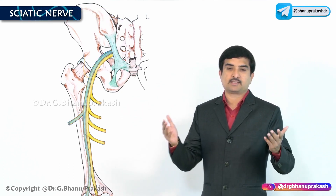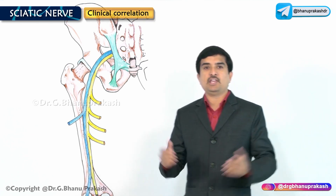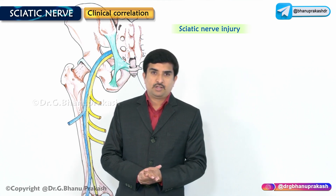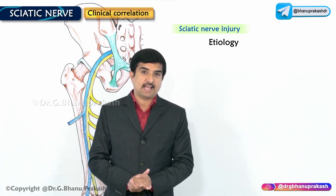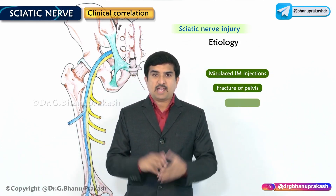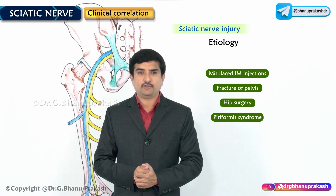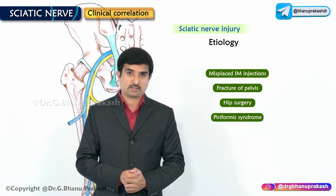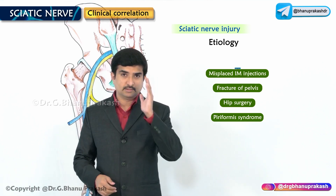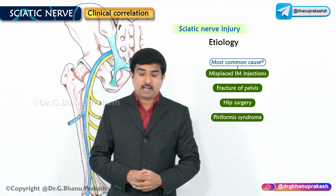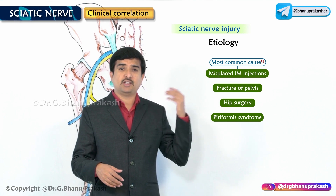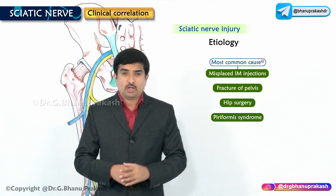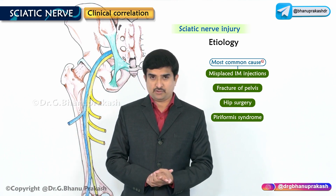Regarding the clinical correlation of the sciatic nerve, sciatic nerve injury is most commonly caused by intramuscular injections in the gluteal region. Other causes include posterior dislocation of the hip, fracture of the pelvis, and hip surgery.